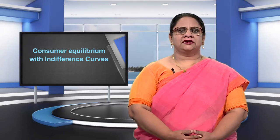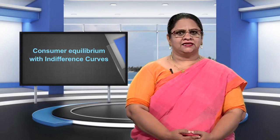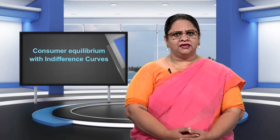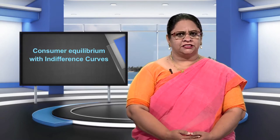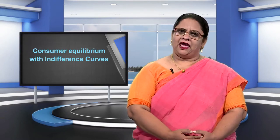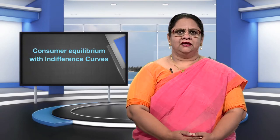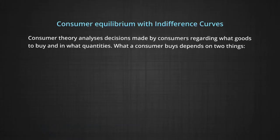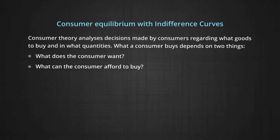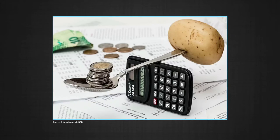In this module, we will take the first steps towards understanding how consumers make their choices by introducing the concepts of budget sets and budget lines. Consumer theory analyzes decisions made by consumers regarding what goods to buy and in what quantities. What a consumer buys depends on two things: what does the consumer want, and what can the consumer afford to buy? Let us examine the second question first.